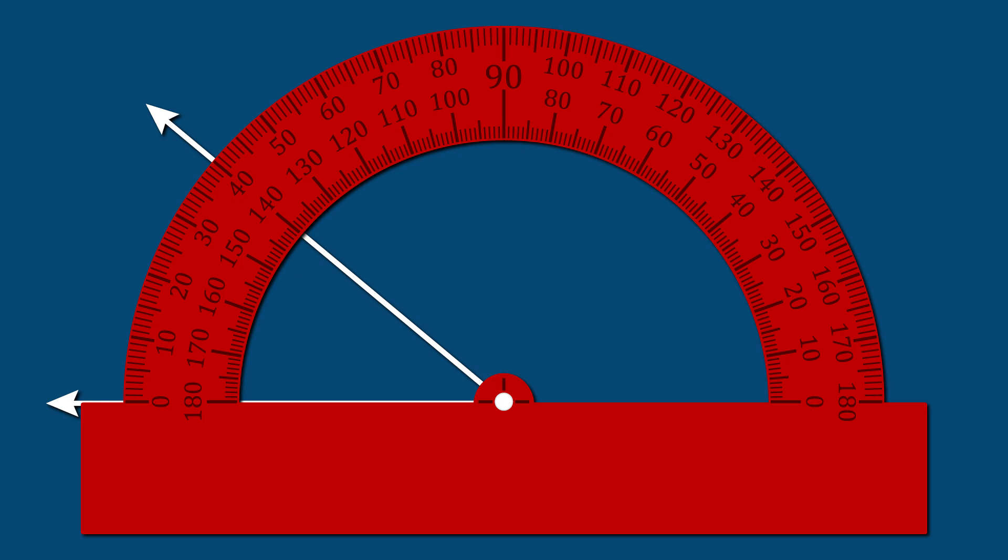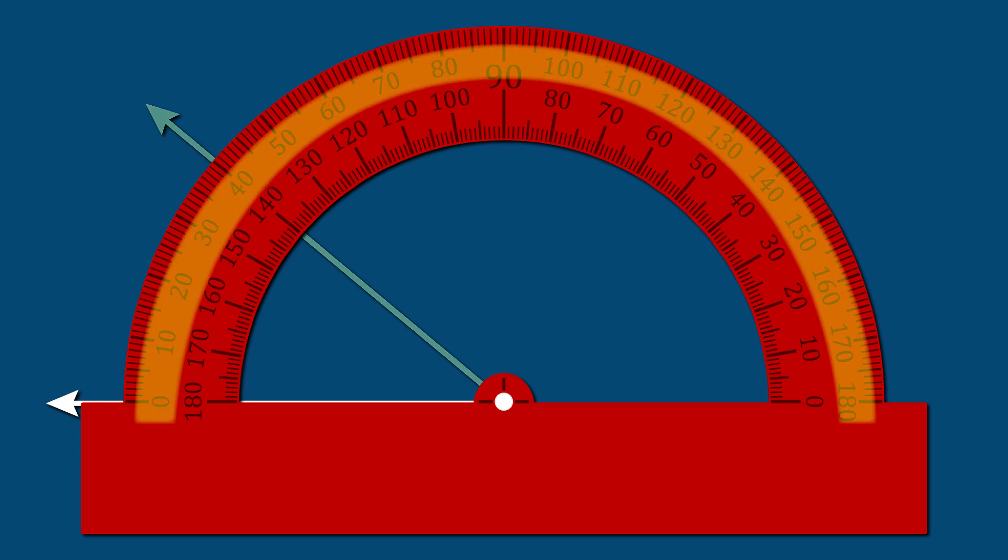Keep in mind, this may be either to the left or right of the vertex point. Then, look at where the other line falls along the protractor. This line will give the measurement of the angle in degrees.